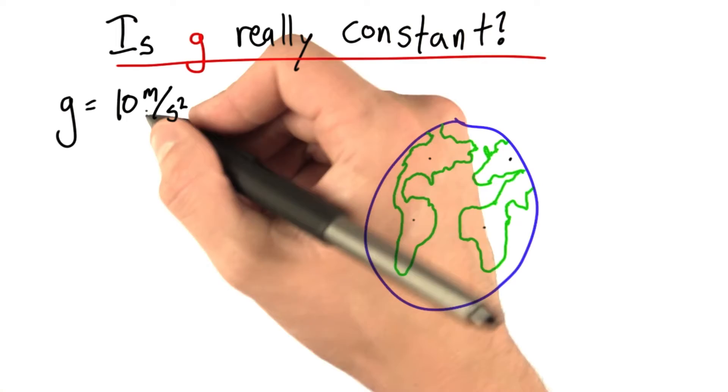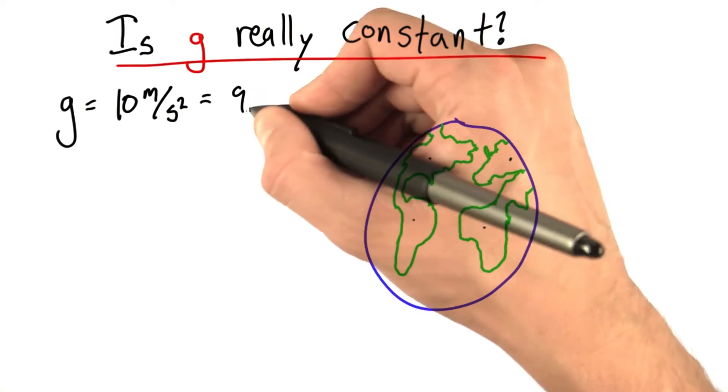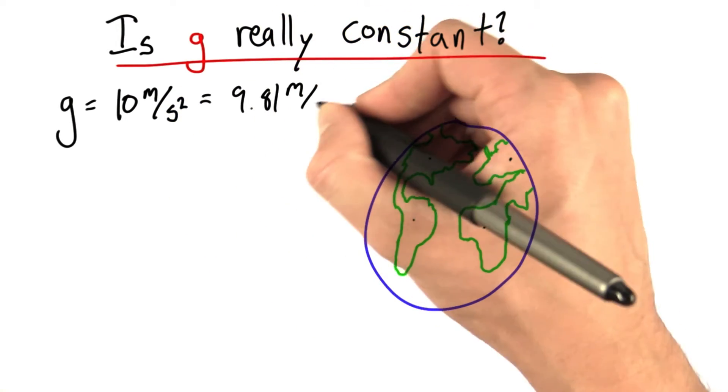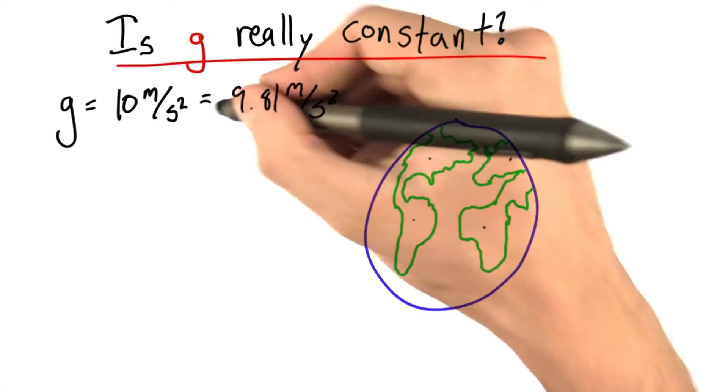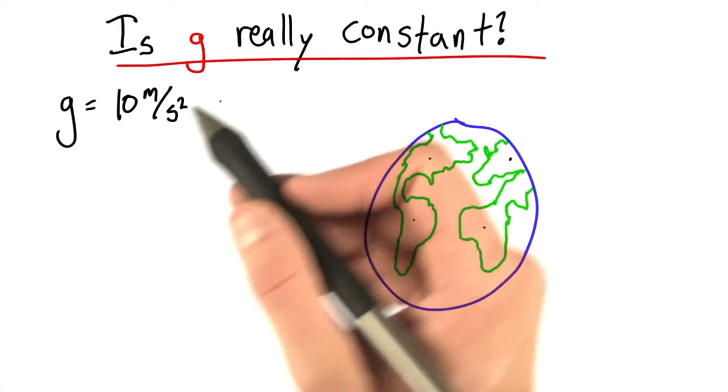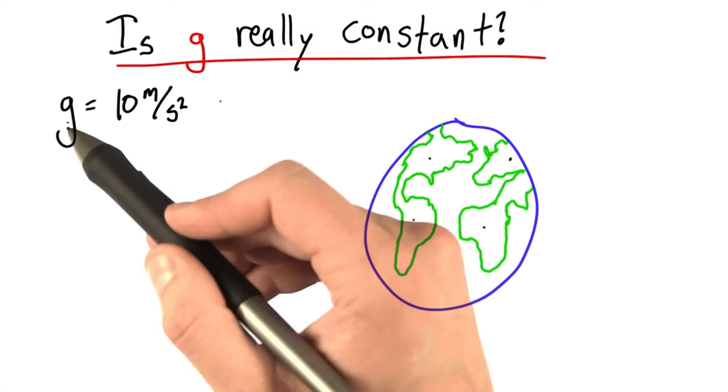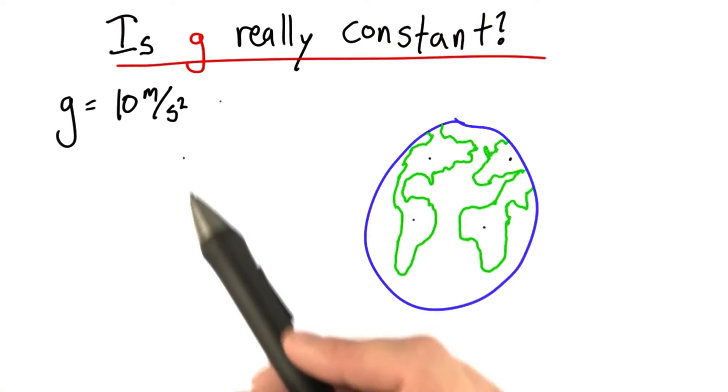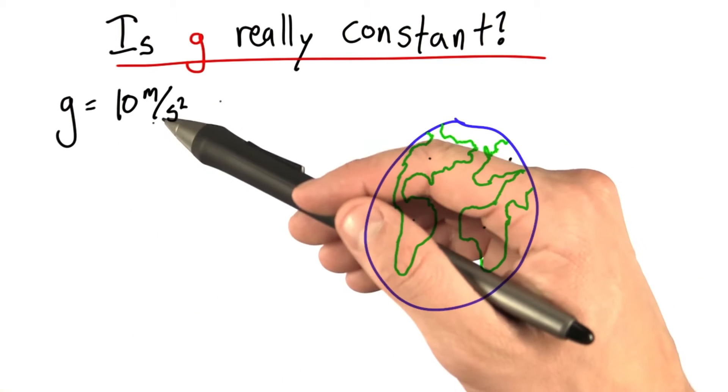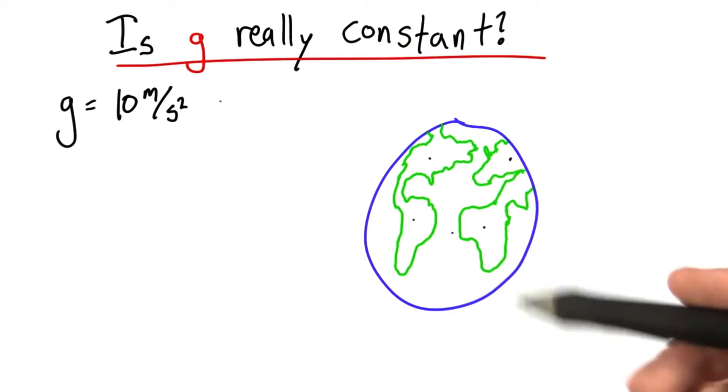Now one thing I have to confess is that it's actually closer to 9.81 meters per second squared, but that's something we're not going to worry about. What I really want to get at in this problem is the underlying cause of this acceleration and examine any sort of differences in this acceleration.